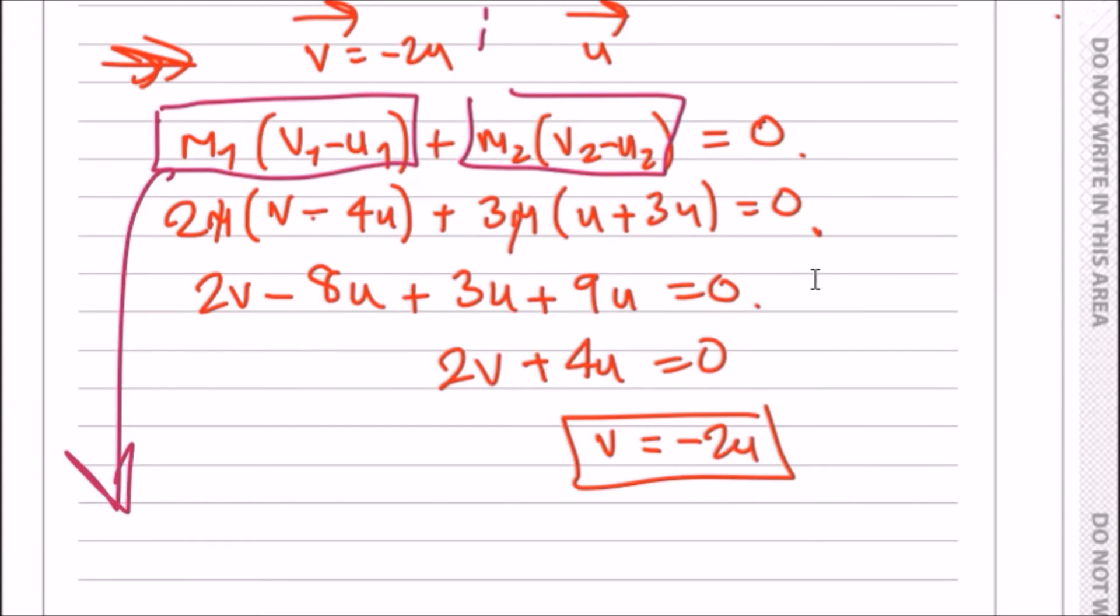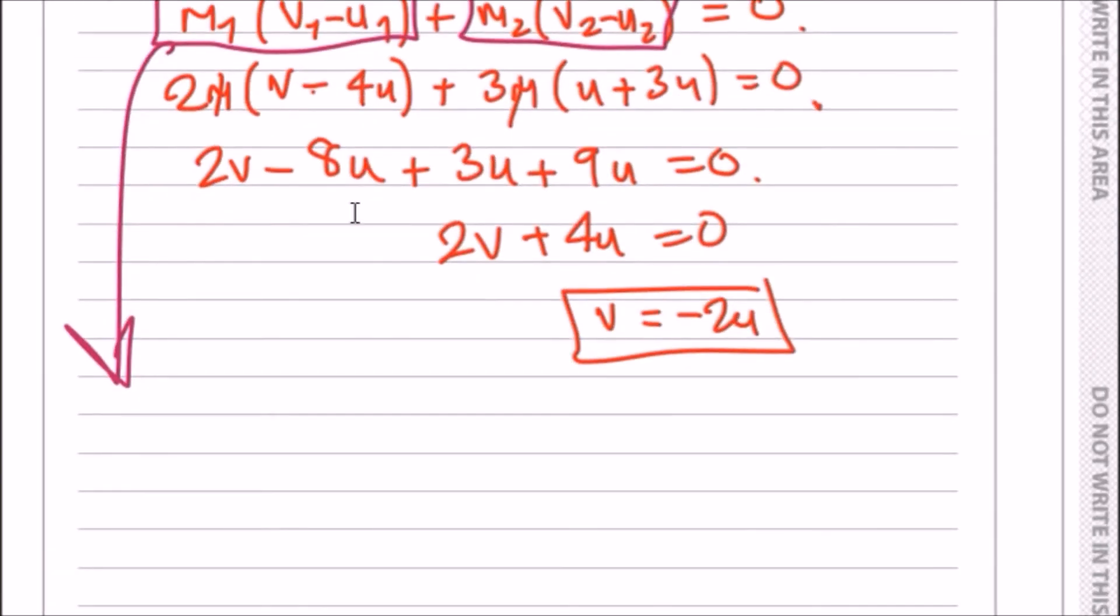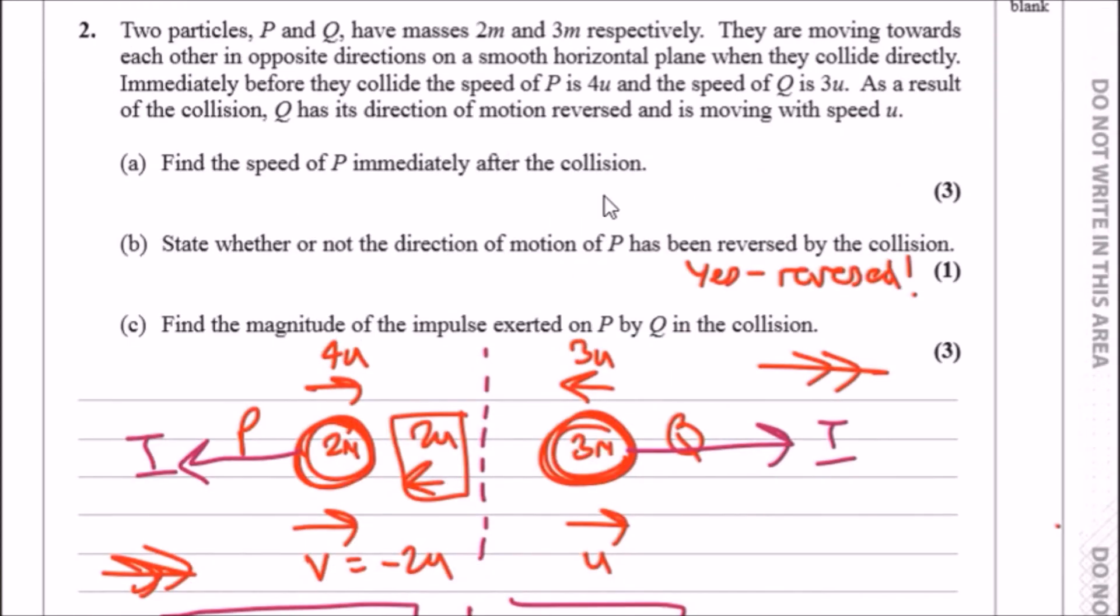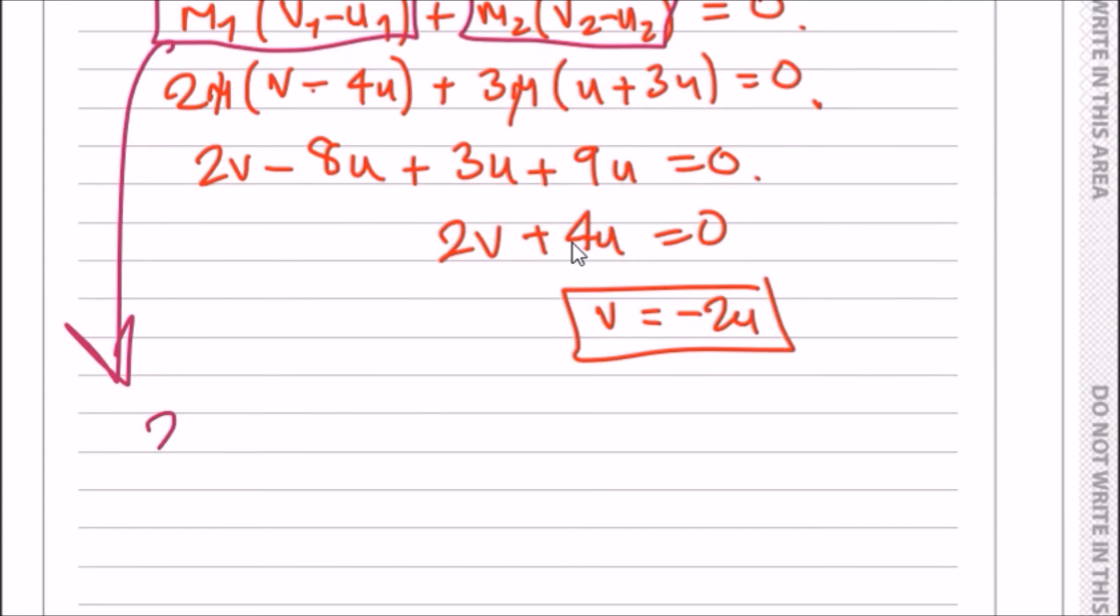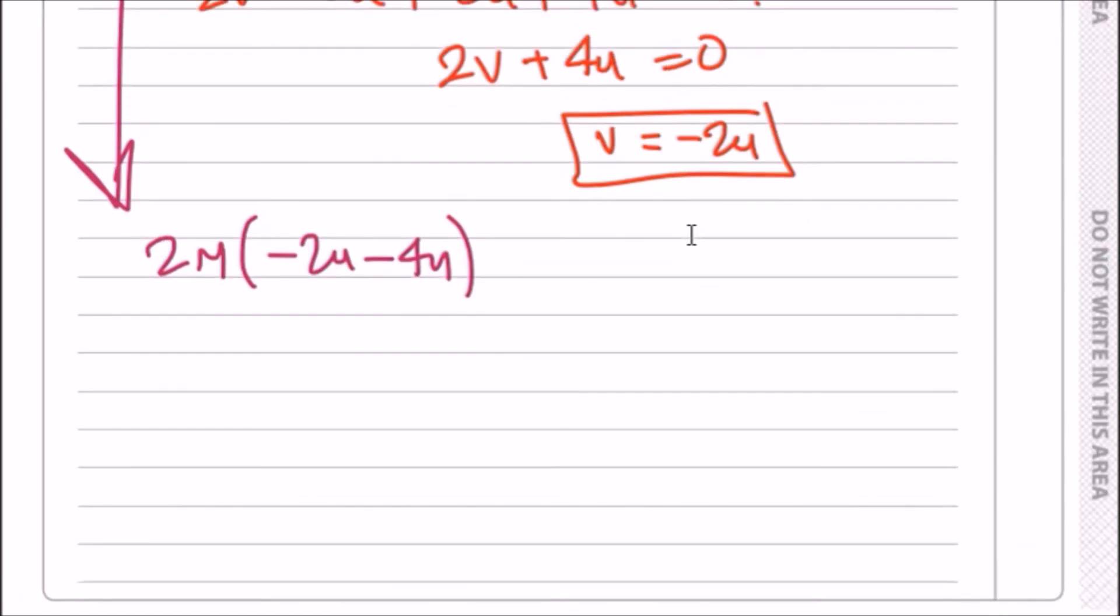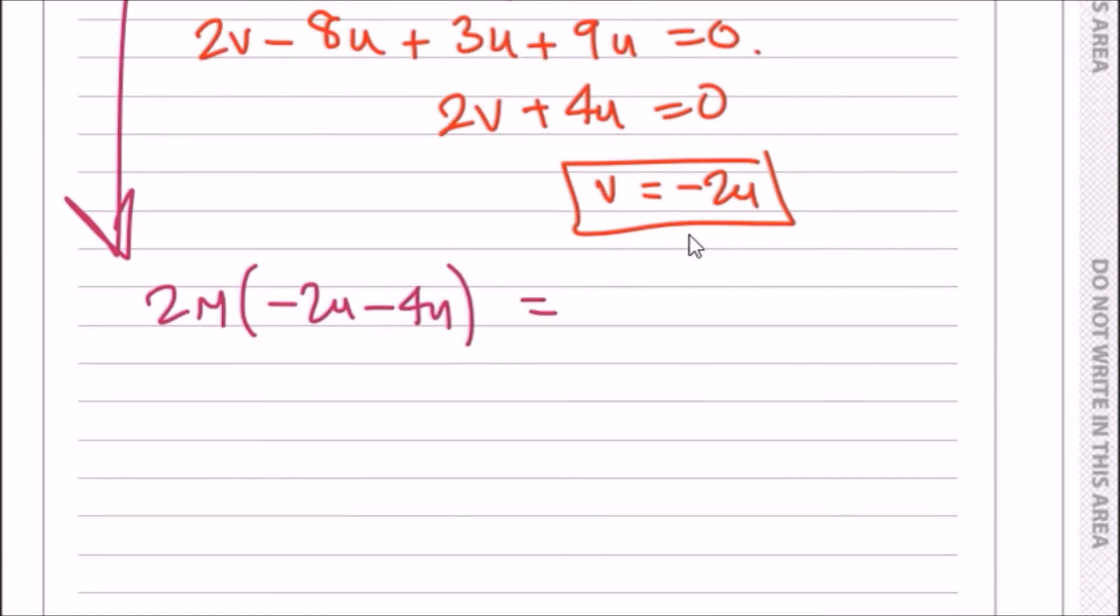We've got v, which is now minus 2u, so minus 2u minus 4u should give us—we should get a mass of 2m times v, which is minus 2u minus 4u. You can get a negative value because this is equal to this, the opposite direction of motion.